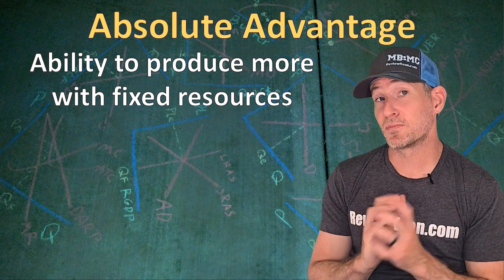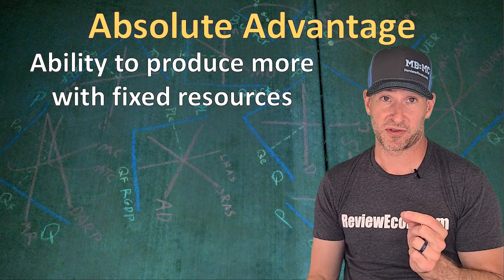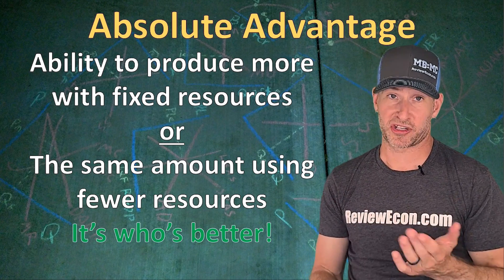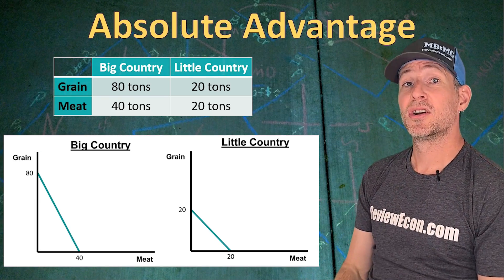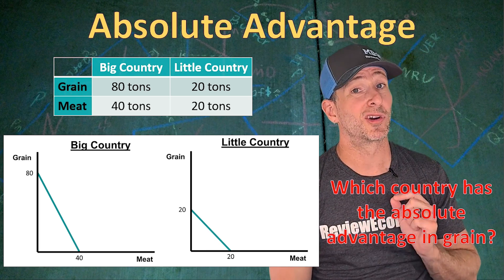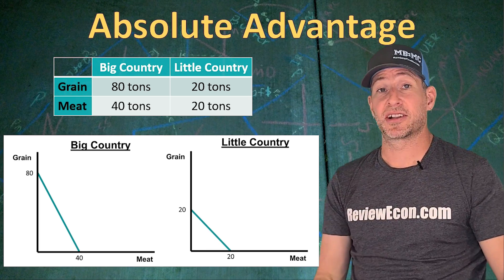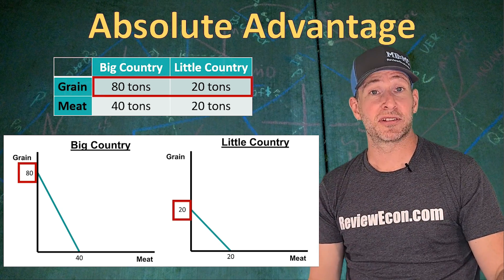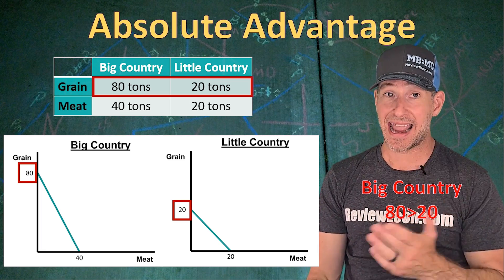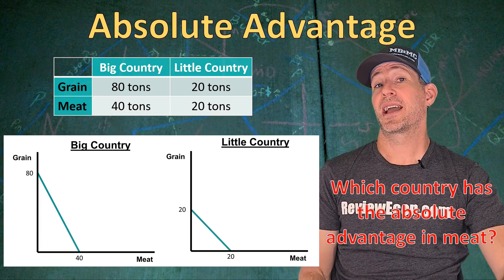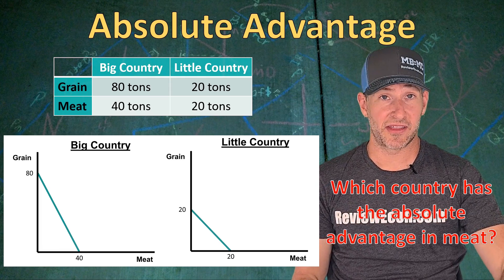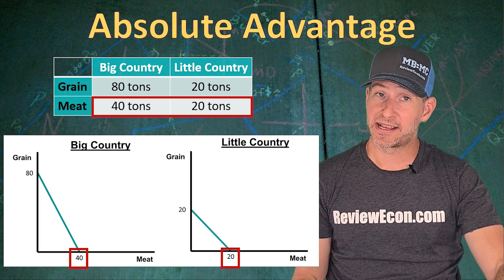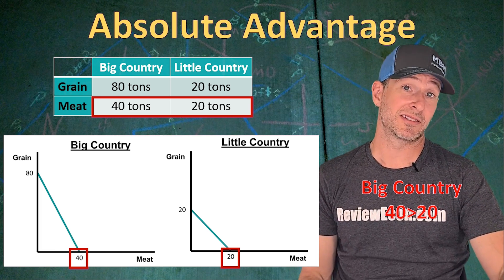Absolute Advantage is the ability to produce more of something with fixed resources, or the same amount with fewer resources — essentially, who's better at producing a particular good. Who has the Absolute Advantage in grain? Big Country, because 80 tons is greater than 20 tons. When it comes to meat, Big Country can produce 40 tons and Little Country 20 tons, so Big Country has the Absolute Advantage there too, because 40 tons is greater than 20 tons.